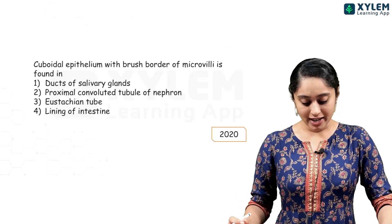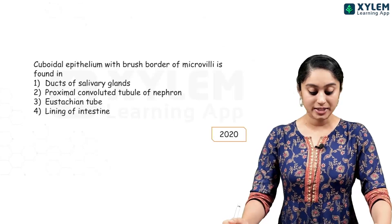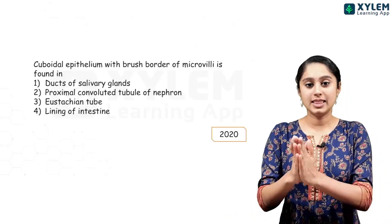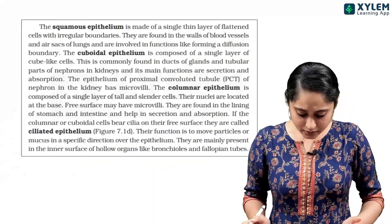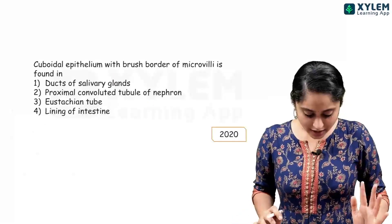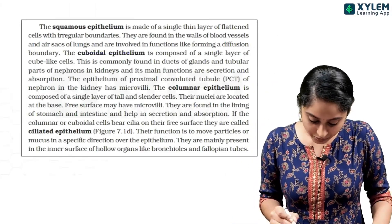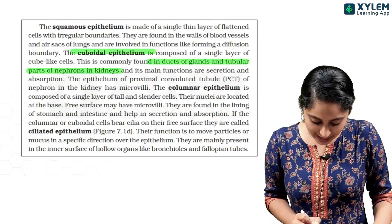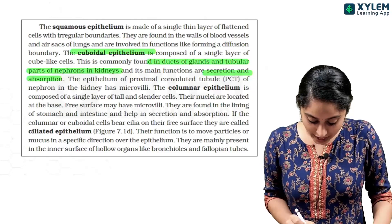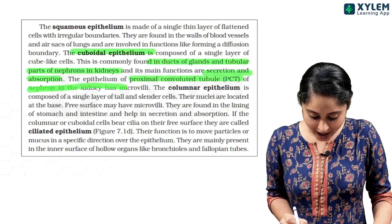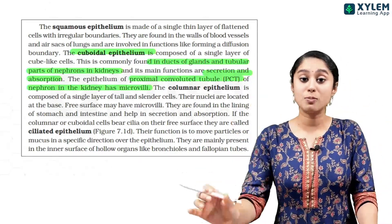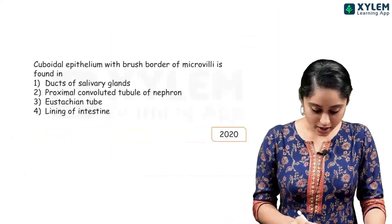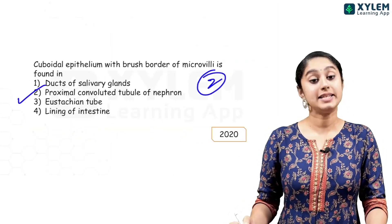A 2020 question: cuboidal epithelium with brush border of microvilli is found in which region? Cuboidal epithelium is commonly found in ducts of glands and tubular parts of nephrons, and mainly helps in secretion and absorption. The epithelium of the PCT of the nephron has microvilli. So cuboidal epithelium with brush border of microvilli is found in the proximal convoluted tubule. We can mark option 2 as the right answer.